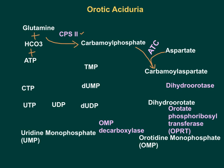This job is done by aspartate transcarbamylase (ATC) enzyme, which is considered the rate-determining enzyme for pyrimidine biosynthesis. Once you get carbamyl aspartate, it is converted to dihydroorotate by dihydroorotase enzyme. Now dihydroorotate will be converted to orotidine monophosphate (OMP) by taking PRPP — phosphoribosyl pyrophosphate — which donates a ribose-phosphate to give the OMP molecule.